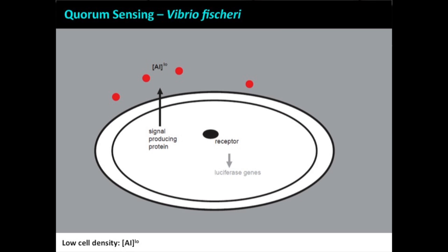I'm showing this to you in this cartoon. Vibrio fischeri, at low cell densities when there's not a lot of bacteria, produces a small amount of this autoinducer signal — this extracellular signal in red — which you can think of like a hormone. When bacterial concentrations are low, the autoinducer concentration is low, and it can't make its way to this receptor, which remains unbound, so luciferase genes — light genes — are not turned on.